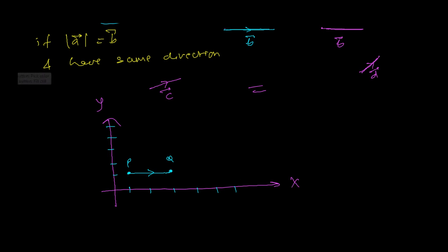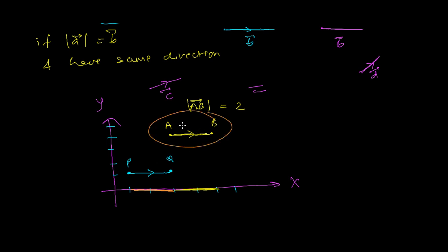Let's say I have one more vector starting at point A and ending at point B — vector AB. Vector AB has a magnitude of 2 unit length, and similarly the magnitude of vector PQ is also 2. Vector PQ is at one place and vector AB is at another place, but both have the same direction, parallel to the x-axis. So vector PQ is parallel to AB and equals vector AB because both have the same magnitude and the same direction.